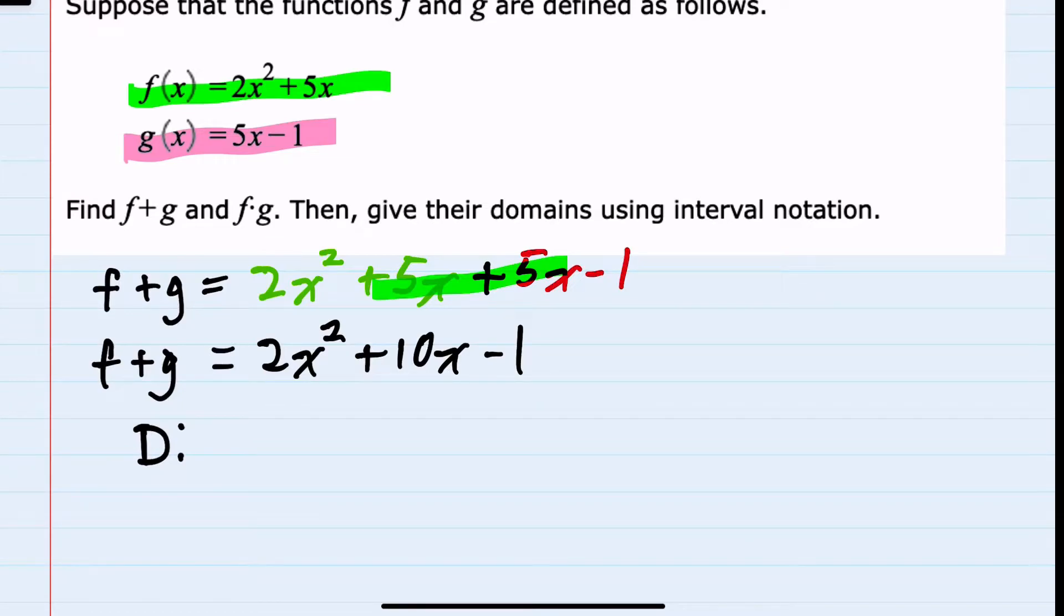There's also no denominators, so we don't have to worry about eliminating something that would give us a zero denominator. So our domain here is all reals, so in interval notation, this is negative infinity to positive infinity.